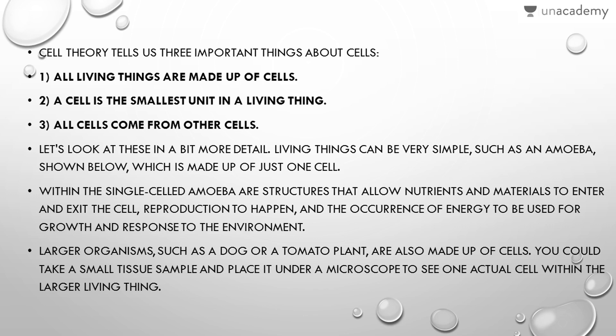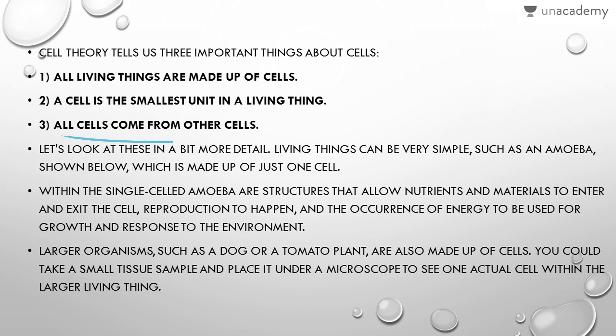First, all living things are made up of cells — from the smallest unicellular organism to mammals, to the biggest animals and plants, they are all composed of cells. Second, a cell is the smallest unit in a living thing. Third, all cells come from other cells, also stated as all cells come from pre-existing cells — meaning pre-existing cells divide to give rise to new cells.